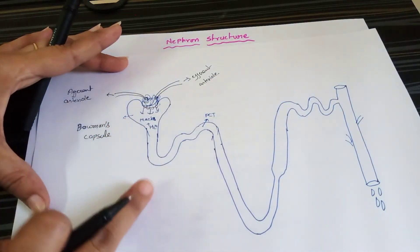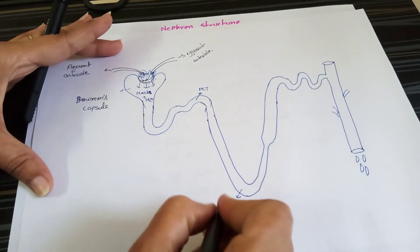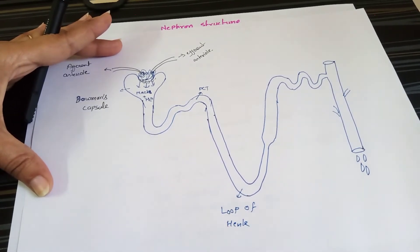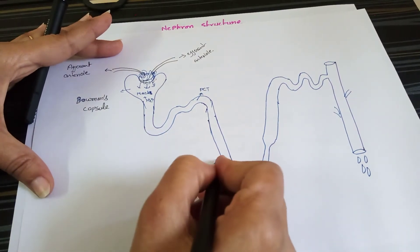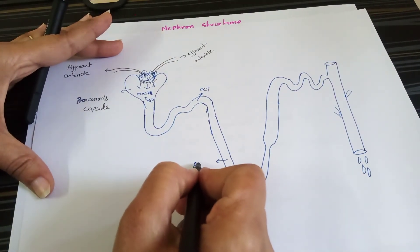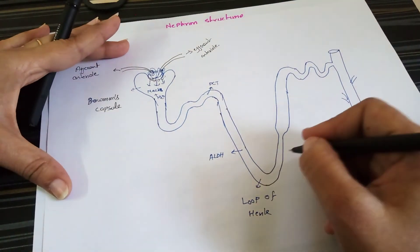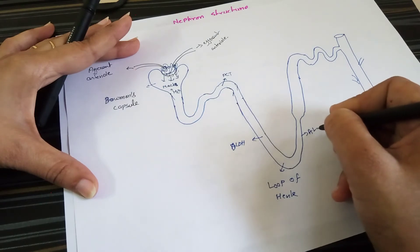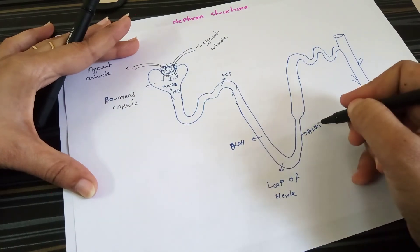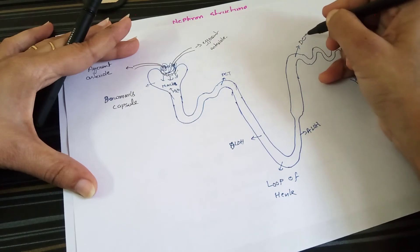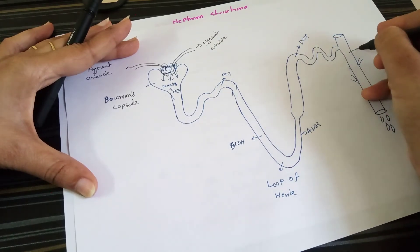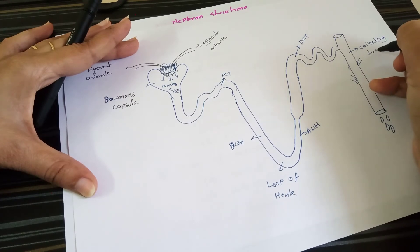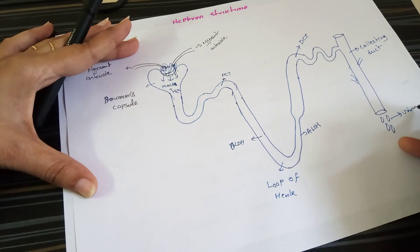The renal capsule connects with the PCT — the proximal convoluted tubule — and this is all part of the renal tubule. It connects with the loop of Henle: this is the descending loop of Henle and this is the ascending loop of Henle. Then it attaches with the DCT, and the DCT connects with the collecting duct, which leads to urine.